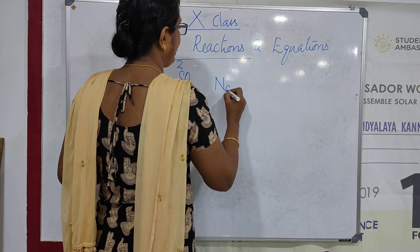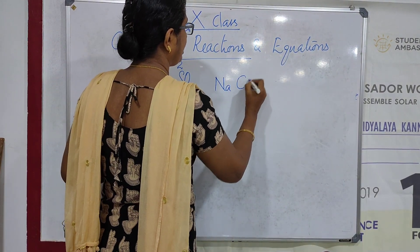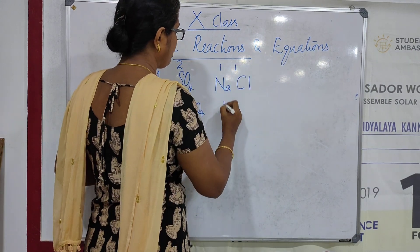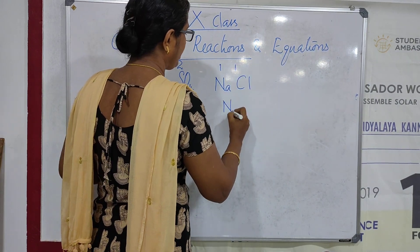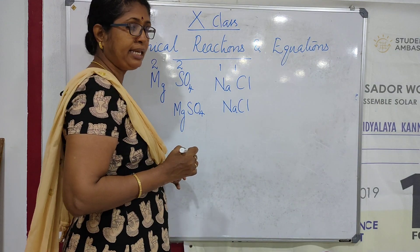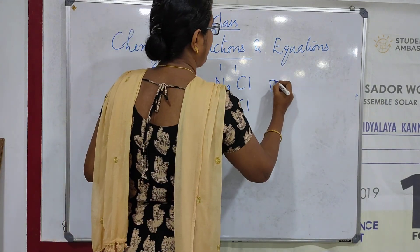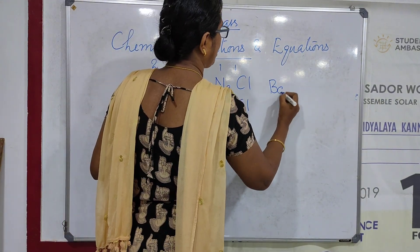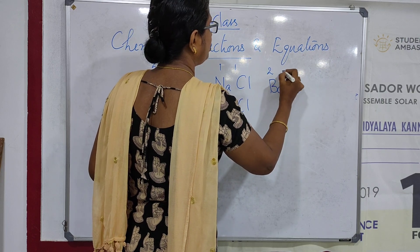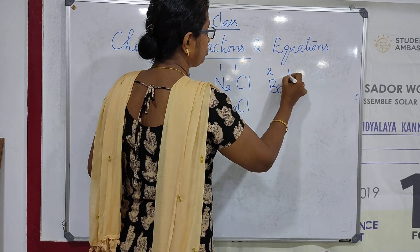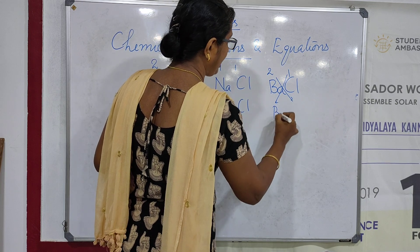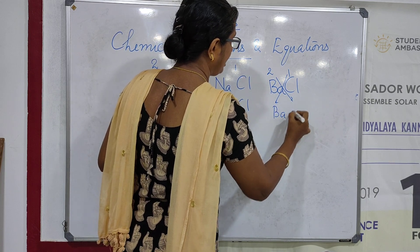Sodium chloride: sodium is Na, chloride is Cl, both have a charge of 1, so the formula of sodium chloride is NaCl. Barium chloride: barium is Ba, chloride is Cl. Barium has a charge of 2 and chlorine has a charge of 1, so the formula is BaCl2. These have already been studied in 9th class.